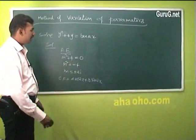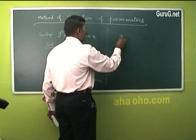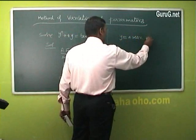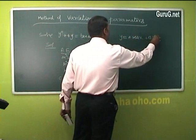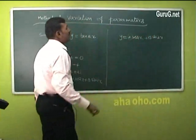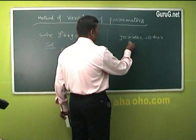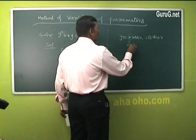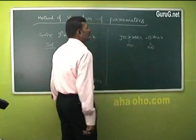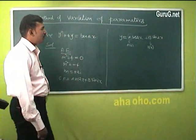In the method of variation of parameters, instead of the complementary function, we write the solution as y = a·cos(2x) + b·sin(2x). Normally a and b are arbitrary constants, but in this method of variation of parameters, a and b are functions of x — that is, a = a(x) and b = b(x).